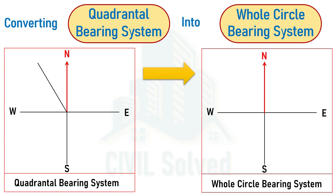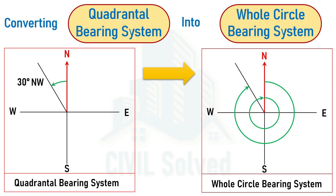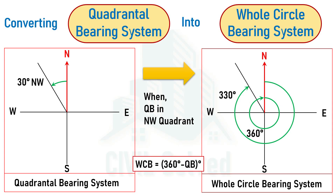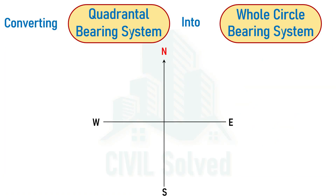If we have a line in the northwest quadrant with a bearing of 30 degrees Northwest, and are asked to convert it into WCB, the same line is drawn and the angle is measured from north clockwise. The total angle in a complete circle is 360 degrees, and the angle between north and the line is 30 degrees, so the WCB = 360 minus 30 = 330 degrees. The generalized form when the line lies in the northwest quadrant: WCB = 360 degrees minus the QB angle.